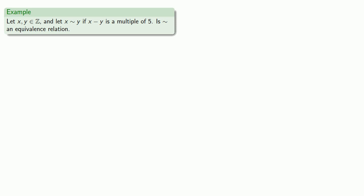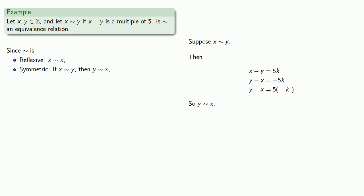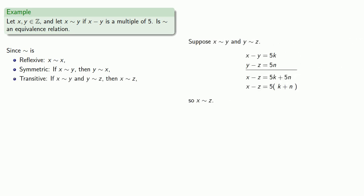Now let's put our pieces together. Since squiggle is reflexive — we proved x squiggle x — symmetric — we proved if x squiggle y then y squiggle x — and transitive — we proved if x squiggle y and y squiggle z then x squiggle z — it follows that squiggle is an equivalence relation.